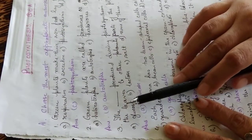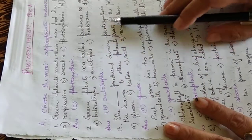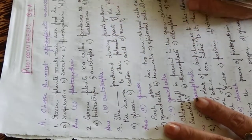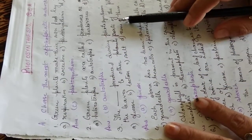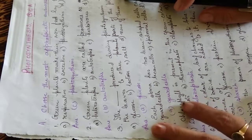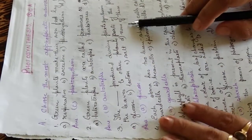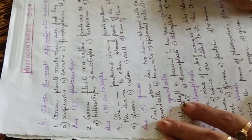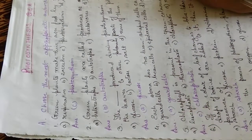Third question, the dash produced during photosynthesis is transported from the leaves to the other parts of the plant. The options are glucose, lactose, salt, or none of these. The answer is glucose, number A.